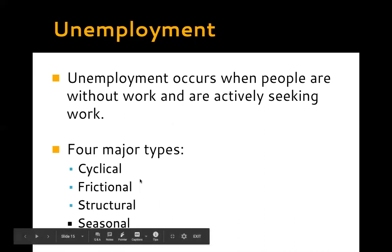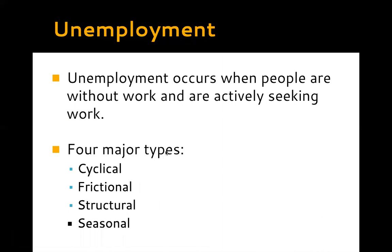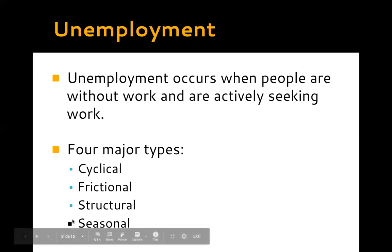Two key things: without work, and actively seeking work. Now, what are the four major types of unemployment? Go ahead and fill them in on your guided notes: cyclical, frictional, structural, and seasonal. Each of these meets a different criteria for why the person is without work — whether they were let go, chose to leave, or can no longer perform the job.